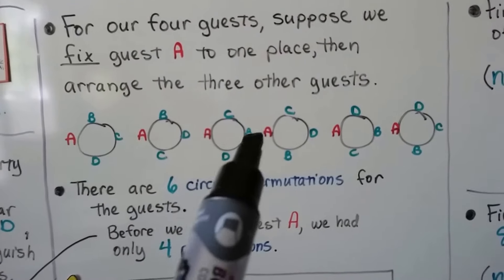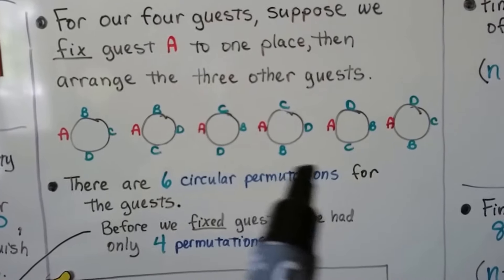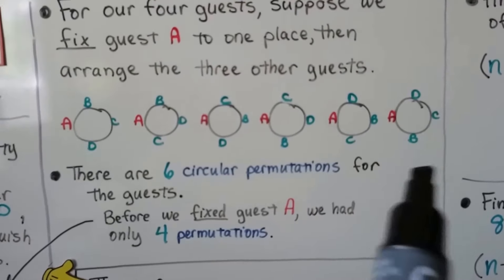Here we have C on the top, we have B, D, and then change it to D, B. Here we have D on the top, and then B, C, and C, B.